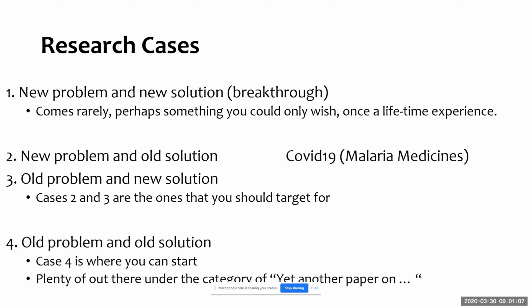Case four is old problem, old solution. Unfortunately, this is where most research lies, and that's why we have a lot of rejections. Reviewers ask 'so what?' because we already know it — it's an old problem and an old solution. One review I made said: whatever the author is saying is already being implemented in the industry, so what's the point of this paper? You can start with case four if you've never published, just to get the feel, but ultimately target cases two and three.